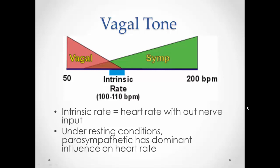Vagal tone refers to the parasympathetic influence over our heart rate. If you removed a heart from the body and it could still beat on its own, it would actually beat at 100 to 110 beats per minute — that is called the intrinsic heart rate. So the heart rate without any nerve input at all is about 100 to 110 beats per minute. But our resting heart rate is at 70, so why isn't our heart beating at 100 beats per minute at rest? That has to do with the effects of the parasympathetic nervous system on the heart.